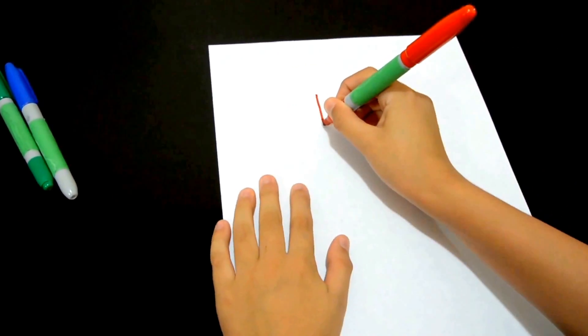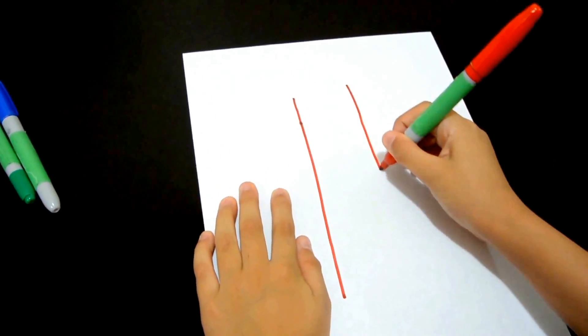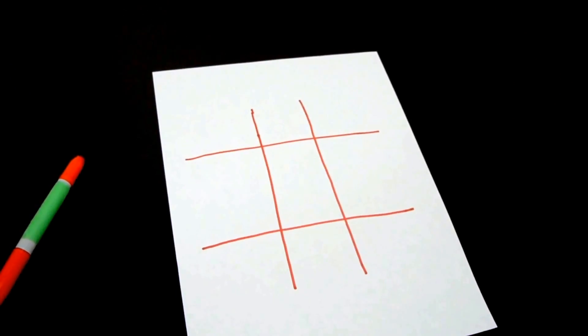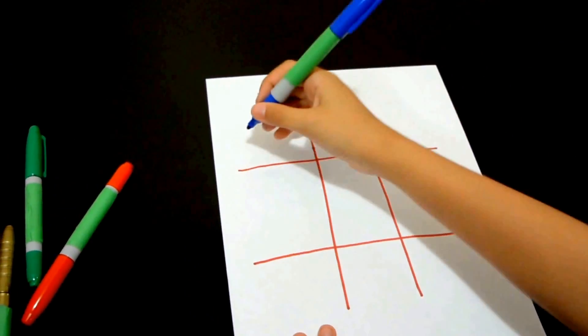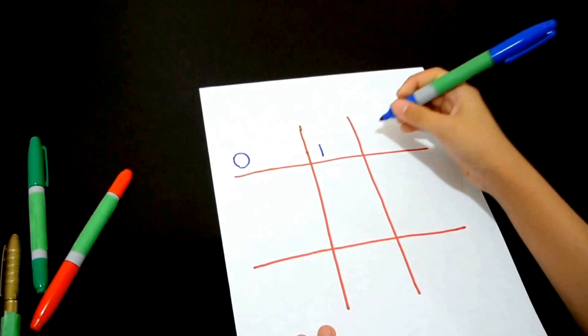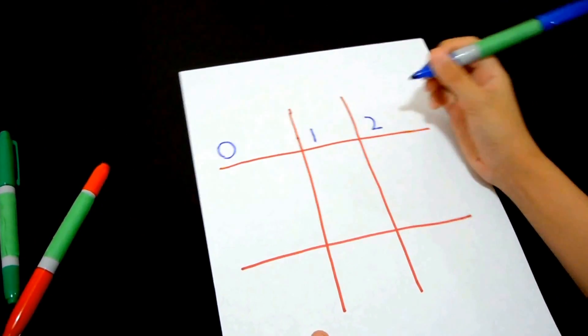First, draw a big number sign. Now write 0, 1, and 2 right here.